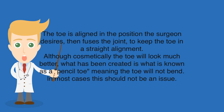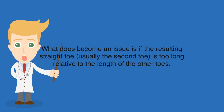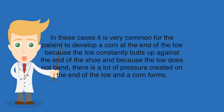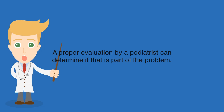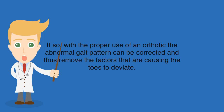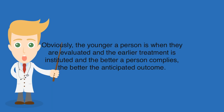In most cases a non-bending toe should not be an issue. What does become an issue is if the resulting straight toe, usually the second toe, is too long relative to the length of the other toes. In these cases it is very common for the patient to develop a corn at the end of the toe, because the toe constantly butts up against the end of the shoe and because the toe does not bend, there is a lot of pressure created and a corn forms. Contrary to what you may read elsewhere, there are no exercises that will straighten your toes; however, in many cases the formation of overlapping toes, bunions, and hammer toes are the result of an abnormality in one's gait. A proper evaluation by a podiatrist can determine if that is part of the problem. With the proper use of an orthotic, the abnormal gait pattern can be corrected and thus remove the factors that are causing the toes to deviate. The younger a person is when evaluated and the earlier treatment is instituted, and the better a person complies, the better the anticipated outcome.